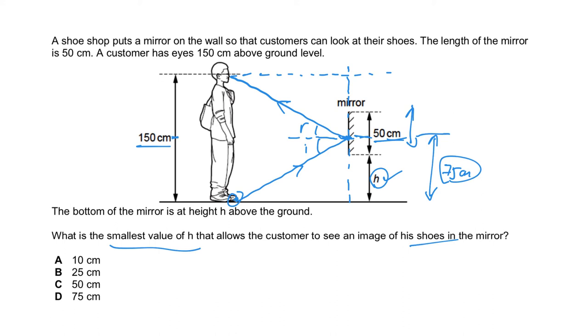As you know, this height is 75cm, so that means the minimum H—I can shift this mirror all the way to this position and the height of the mirror will still be 50cm.